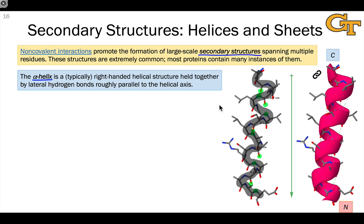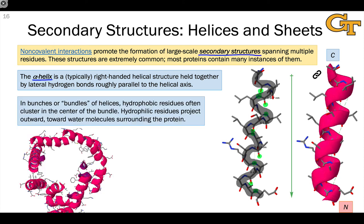We often see alpha helices clustered together to form bunches or bundles, and in these we tend to find hydrophobic residues in the center of the bundle and hydrophilic residues projecting outward, and this is actually a manifestation of a bigger trend.